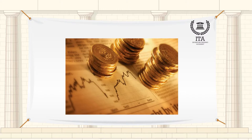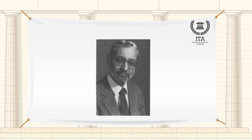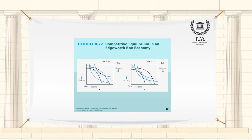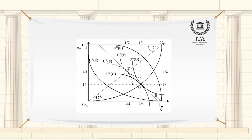Radner Equilibrium was introduced by American economist Roy Radner in 1968 and explores the condition of competitive equilibrium under uncertainty. The concept is an extension of the Arrow-Debreu Equilibrium and the base for the first consistent incomplete markets framework.